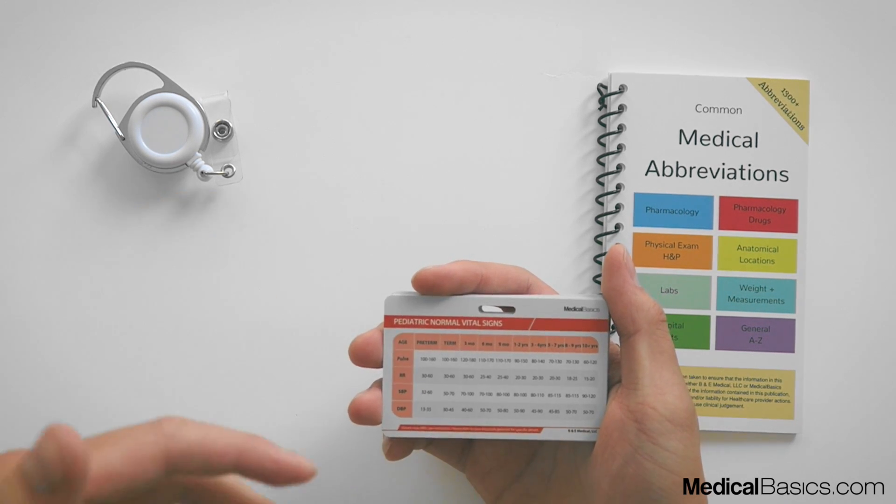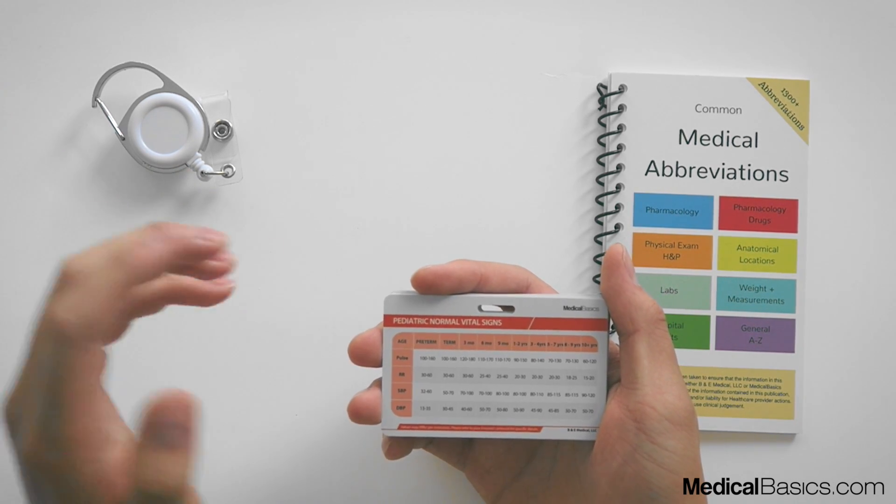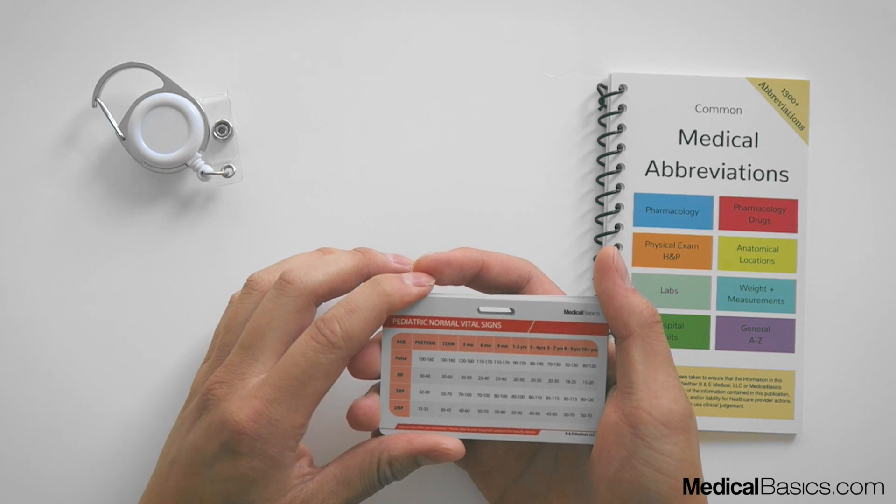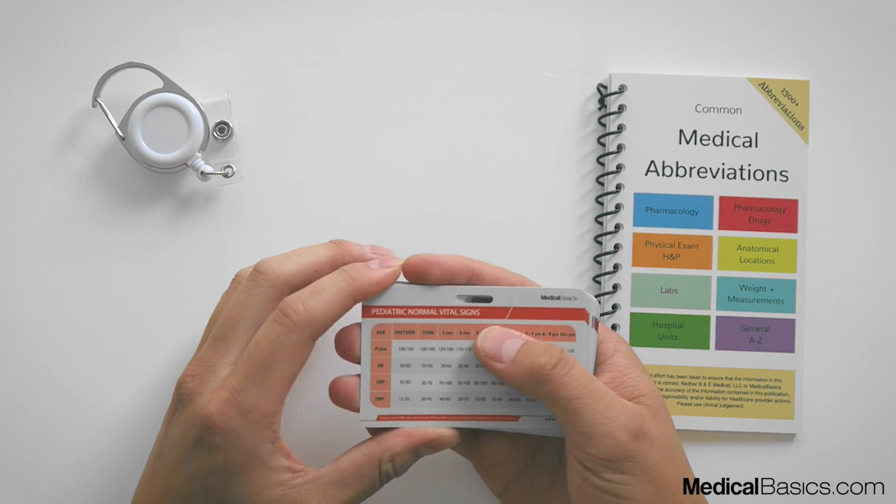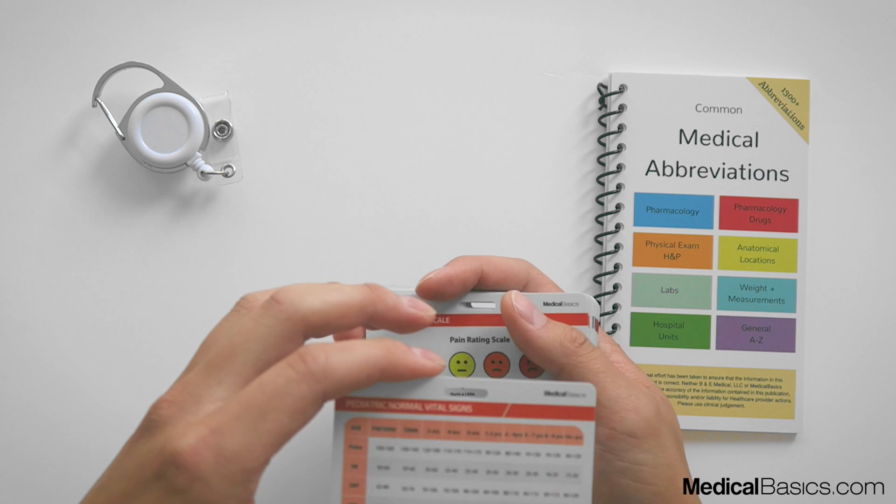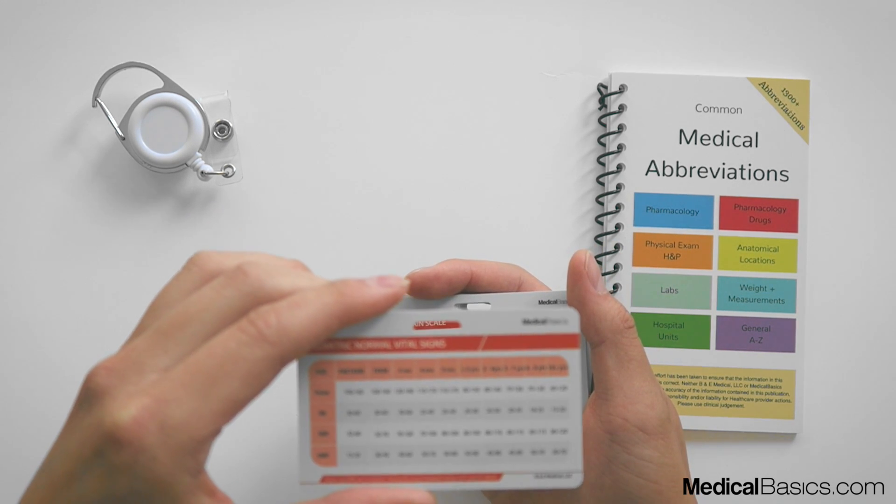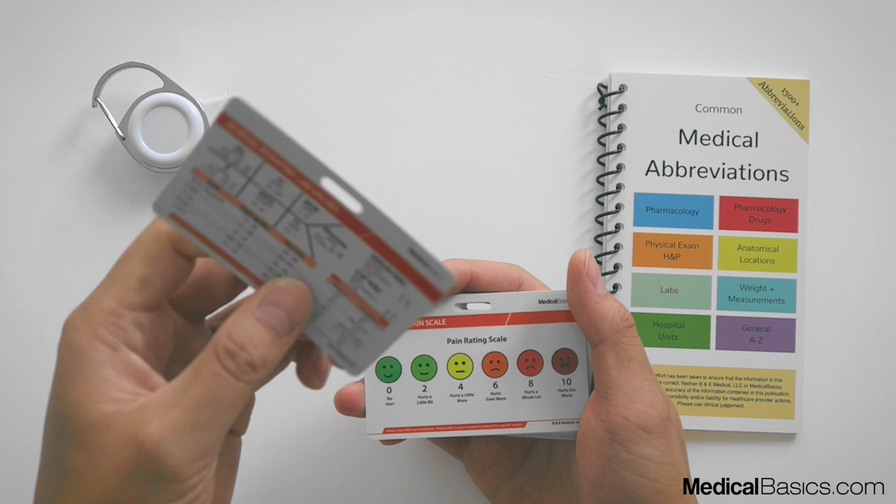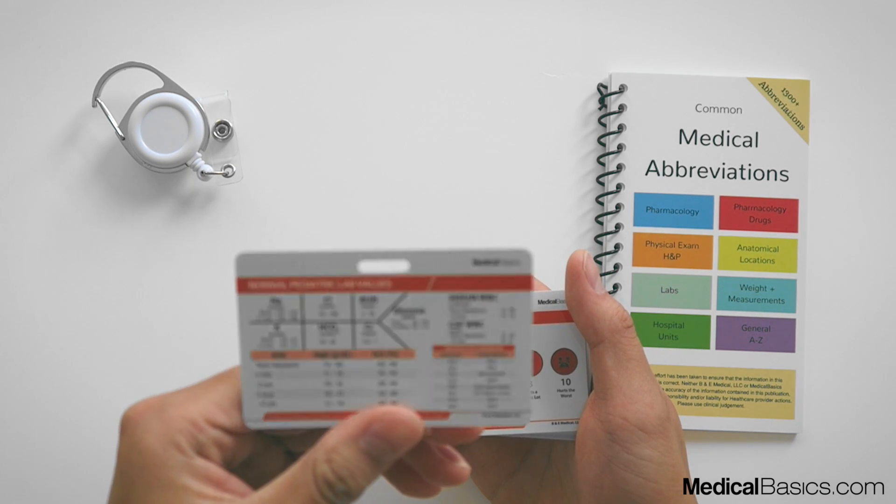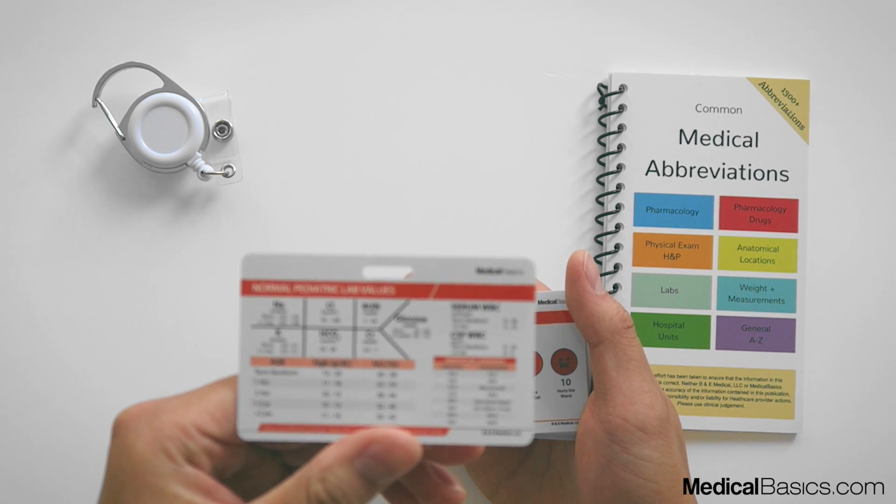I figured it was something that people commonly reference, and so this was something that I obviously wanted on a card. And so we did here as we broke it down into different types of pediatric normal vital signs. Hopefully you can see that here. And on the back what we have are all the different pediatric normal lab values.